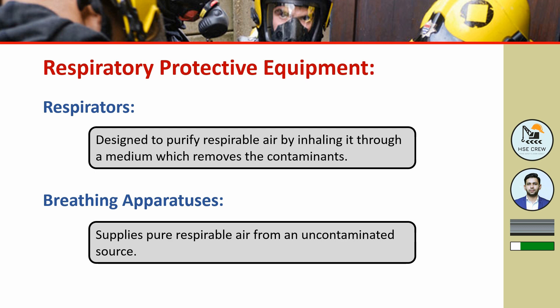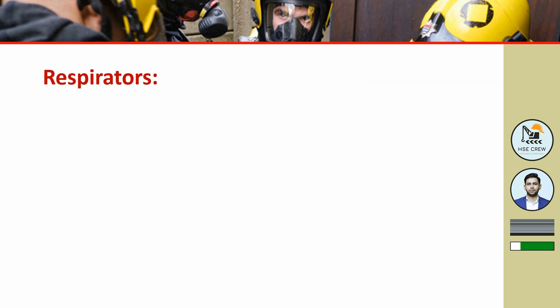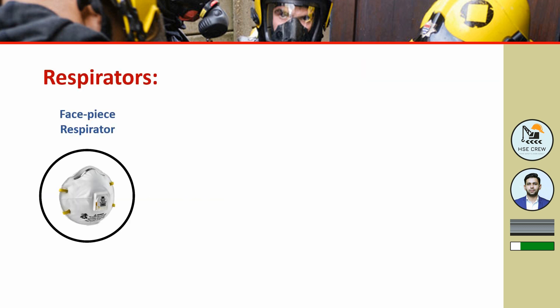Now I will discuss respirators in detail. The first type is the face piece respirator, which is the most common respirator. It reduces and eliminates your exposure to dust, pollen, and chemical pollutants. This is widely used and is also known as a dust mask. It is simply a barrier through which we breathe, which retains dust particles and other pollutants.